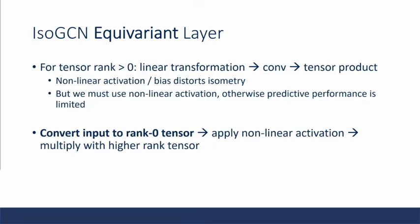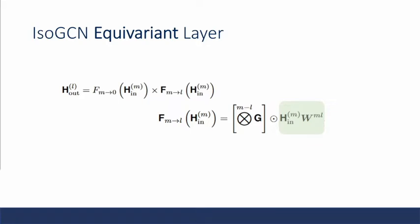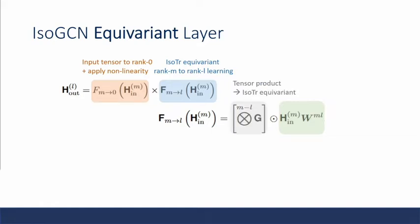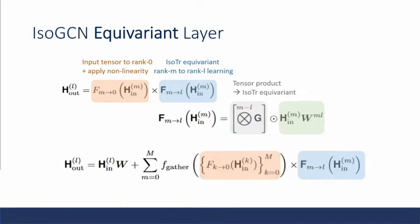But that doesn't mean we can just give up using nonlinear activations, because otherwise we would lose out on a lot of predictive performance. So the solution that the authors came up with is to convert the input into a rank 0 tensor, then apply the nonlinear activation to the rank 0 tensor input, and then we multiply it with a higher rank tensor. Here we have the definition of an iso-GCN equivariant layer. This first part is the input tensor being converted into rank 0, then the nonlinear applied. And the second part is the isometric transformation equivariant learning, which elevates the rank of the data from m to l. And this is defined as, as we saw earlier, the pth tensor power of the iso-adjacency matrix. And this is going to be the final definition of our iso-GCN equivariant layer.